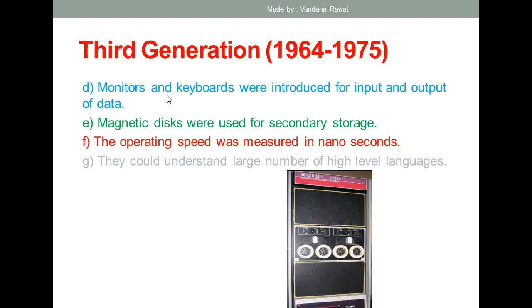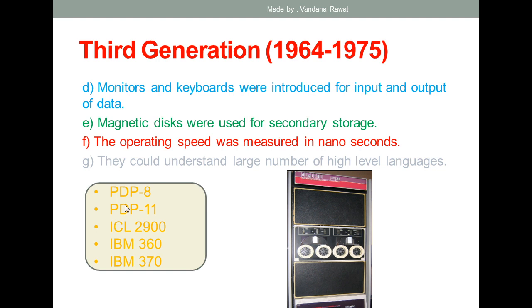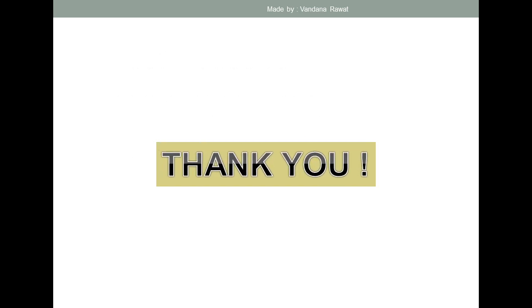These computers can understand a large number of high level languages, not just a single one. Examples of third generation computers include PDP-8, PDP-11, ICL 2900, IBM 360, and IBM 370. Today we covered these three generations of computers. The remaining generations will be covered in the next session. Please note down these computer systems in your notebook, and we'll discuss the rest of the topics in the next lecture. Thank you everyone.